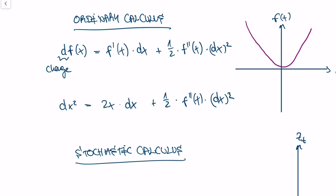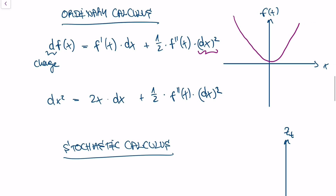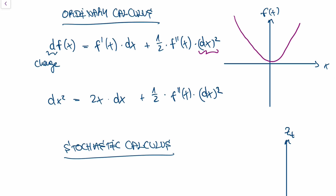For ordinary functions, the change in x squared is very, very small, because we're talking about small changes in the variable x. So if you have a small change in x — say 0.01 — then 0.01 squared becomes incredibly small. So in ordinary calculus, you can actually ignore this second-order term, and the change in the function is given by the first derivative times the change in the variable x.